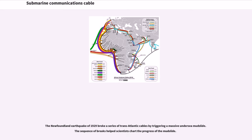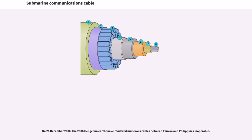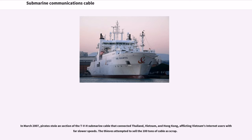The Newfoundland earthquake of 1929 broke a series of transatlantic cables by triggering a massive undersea mudslide; the sequence of breaks helped scientists chart the progress of the mudslide. In July 2005, a portion of the Zimui-3 submarine cable south of Karachi disrupted almost all of Pakistan's communications with the rest of the world, affecting approximately 10 million internet users. On December 26, 2006, the Hengchun earthquake rendered numerous cables between Taiwan and the Philippines inoperable. In March 2007, pirates stole a section of the TBH submarine cable connecting Thailand, Vietnam, and Hong Kong; the thieves attempted to sell the 100 tons of cable as scrap.